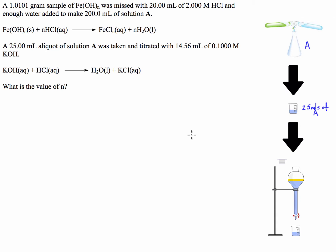G'day guys, we're going to do a back or indirect titration question today. We've got a 1.0101 gram sample of Fe(OH)n mixed with 20 mils of 2 mole per litre hydrochloric acid and enough water to make 200 mils of solution A. A 25 mil aliquot of solution A was taken and titrated with 14.56 mils of 0.1 mole per litre potassium hydroxide according to this equation. What is the value of n?